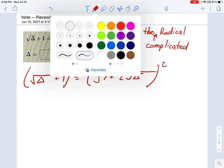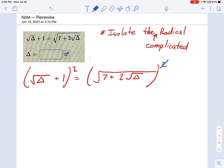Now, the right side becomes simple quickly. That squared cancels out with this radical, and what you get is just the radicand, 7 plus 2 radical delta. But the left side does not simplify quite so easily.